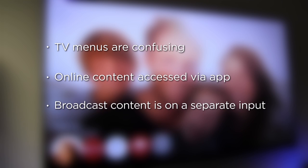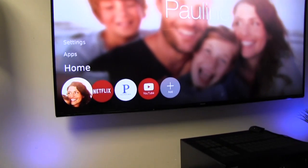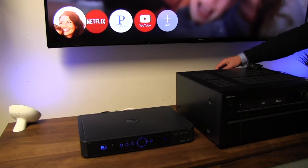In many of today's smart TVs, the native menu for content can be confusing and tough to manage. Online or OTT content is accessed via an app, while broadcast content from a set-top box is on a separate input, requiring the user to manually select a different HDMI port. QuickSet 3.0 enabled smart TVs can deliver everything on the same level — live and recorded TV, OTT, and even the smart TV's native apps are in one location.